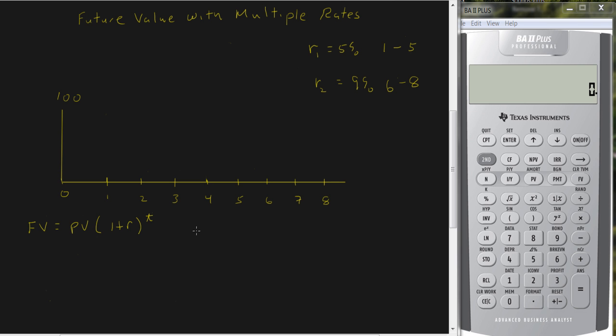But what happens if the interest rate changes someplace in the middle? So I've got an example here. Suppose you deposit $100 today and you'd like to find the future value in year 8. But for the first 5 periods, you get an interest rate of 5%. And then in periods 6, 7, and 8, you get an interest rate of 9%.